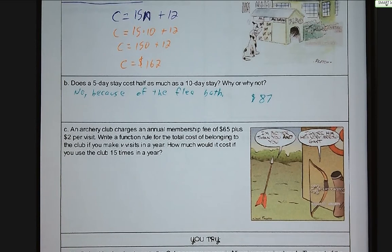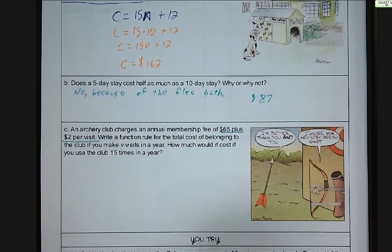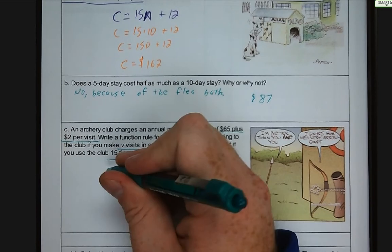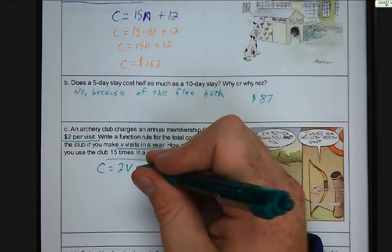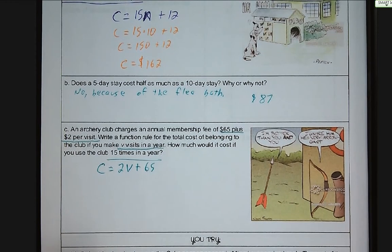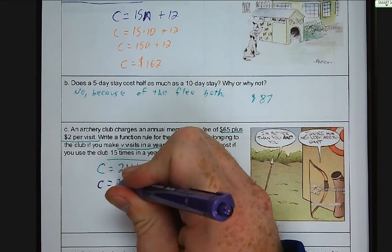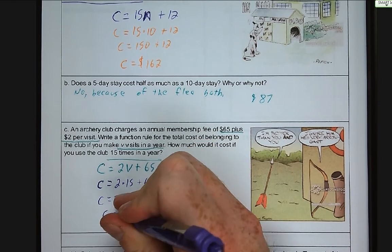Letter C. An archery club charges an annual membership fee of $65 plus $2 per visit. Write a function rule for the total cost of belonging to the club if you make V visits per year. How much would it cost if you use the club 15 times in the year? We've got $65 for the membership fee plus $2 per visit. We want to know a function for V visits in a year, and then we want to know what the price is for 15 times in a year. So cost is equal to $2 per visit, so 2 times V plus $65 for our membership fee. So our cost for 15 visits, we have 2 times 15 plus 65, C equals 30 plus 65, so our cost would be $95.